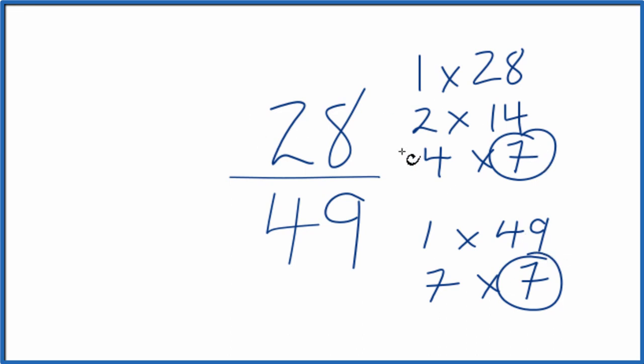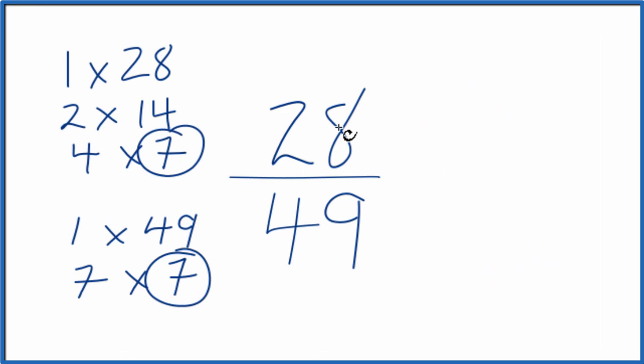We divide 28 by 7, 49 by 7, and we'll simplify the fraction 28/49. Let's move these over here. So 28 divided by 7, that's 4, and then 49 divided by 7 is 7.